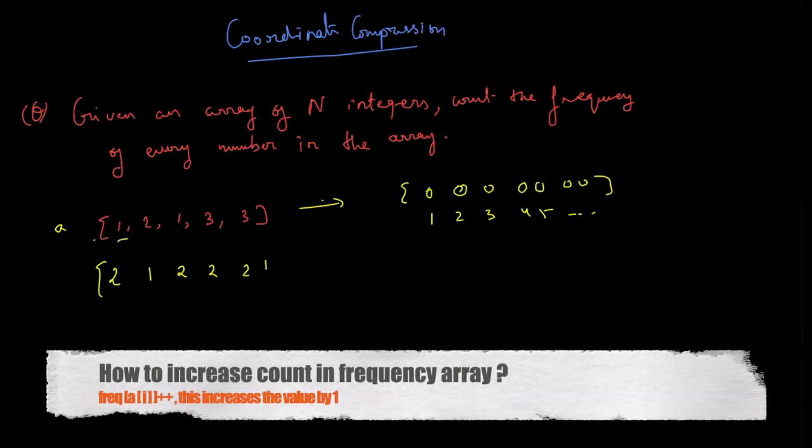So you get 1, what you do is go to 1 and mark it as 1. You get 2, you go to 2 and increase it by 1. Next time you get 1, you go to 1 and increase it by 1. So you get this as 2.